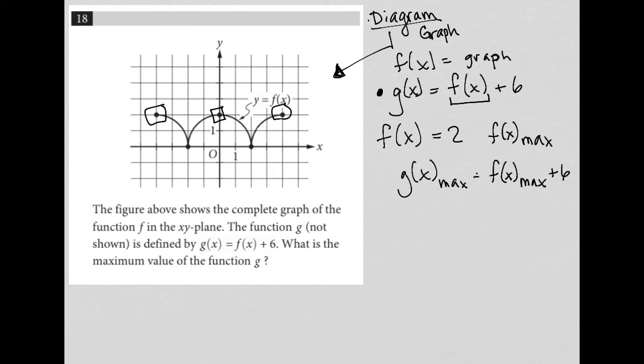So therefore, if f(x) max is 2, we get 2 plus 6 here. So g(x), the maximum value for g(x) is equal to 8. Because 2 plus 6 is 8. So my answer here is 8.